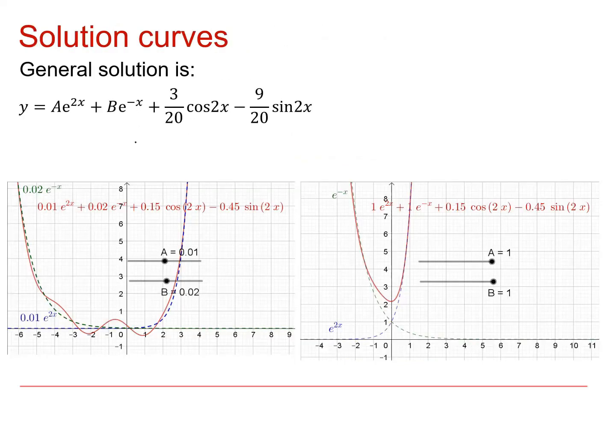So here's a couple of plots for this general solution. The left-hand one has fairly small values for a and b, 0.01 and 0.02. The right-hand one has somewhat larger values, a is 1 and b is 1. In both cases, however, the driving factor for both solution curves for large values of x is the functions that involve e. So the blue line here is the e to the 2x bit of the general solution.